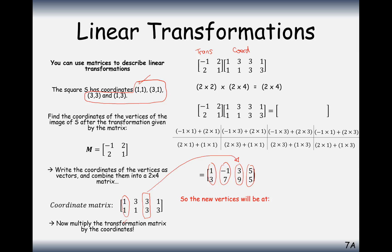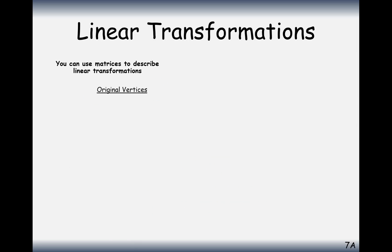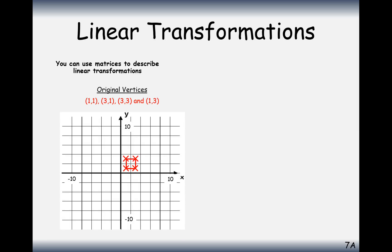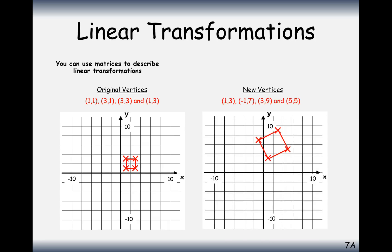We now have new vertices for our square S at these coordinates. The original set of coordinates formed one square, and the new vertices form a new square. It preserves the shape — it may stretch it in one direction, but in this case it hasn't. It has also rotated it. This is how matrices are used in real-life applications — computer programs perform transformations this way, applying a matrix to a set of coordinates to move a digital character in a video.